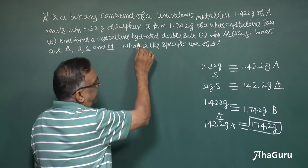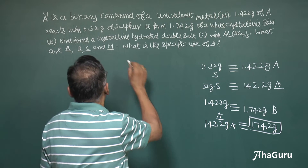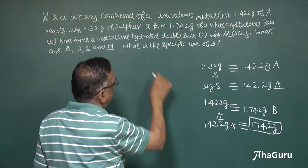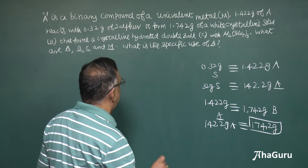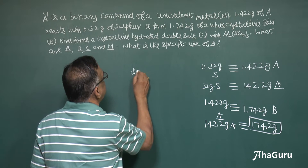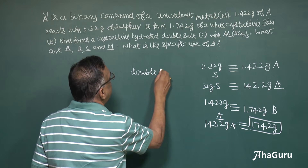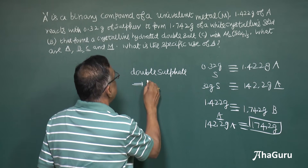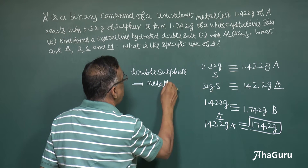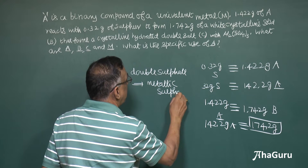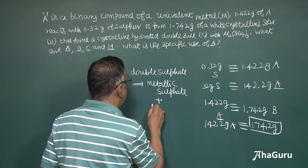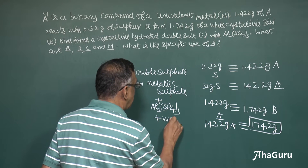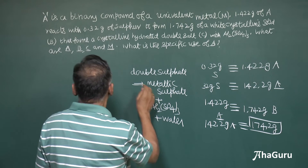Since it forms a crystalline hydrated double salt with aluminium sulfate, the original compound A reacts with sulfur to form a sulfate. So the double salt must be a double sulfate, which contains the metallic sulfate plus aluminium sulfate plus water of crystallization. This must be the composition of the double sulfate.